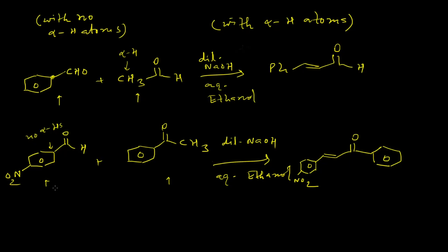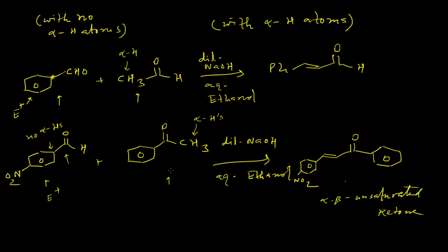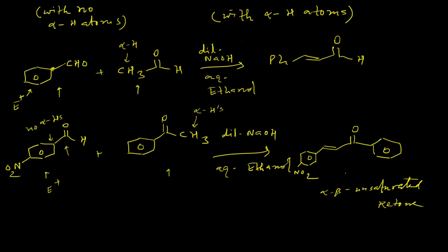In the second reaction also, para-nitrobenzaldehyde does not have any alpha hydrogen atoms, so it cannot form any enolate during the reaction. It will behave as an electrophile. The acetophenone, which has three alpha hydrogen atoms, will eventually form the enolate during the reaction, and that enolate will act as a nucleophile and attack this carbonyl center to produce the alpha-beta unsaturated ketone. In both cases, the Claisen-Schmidt reaction conditions are fulfilled.